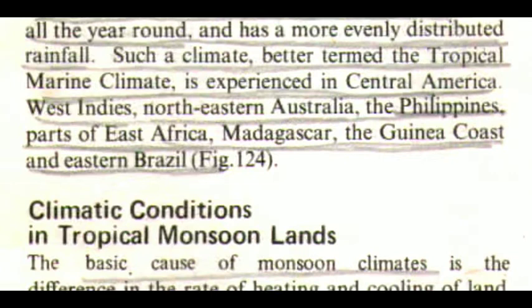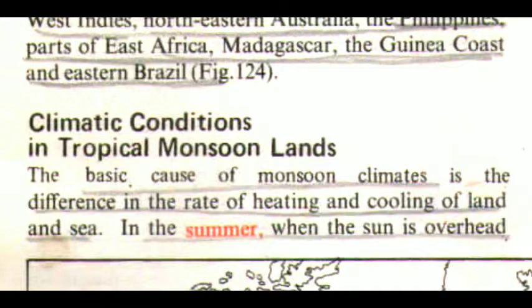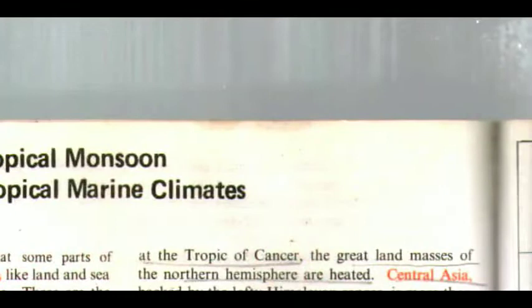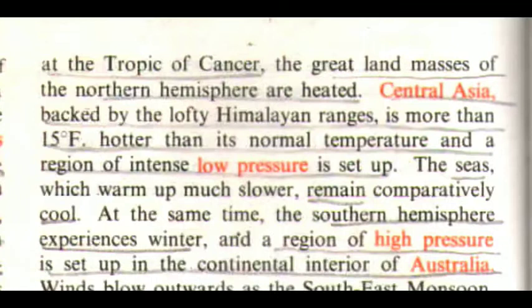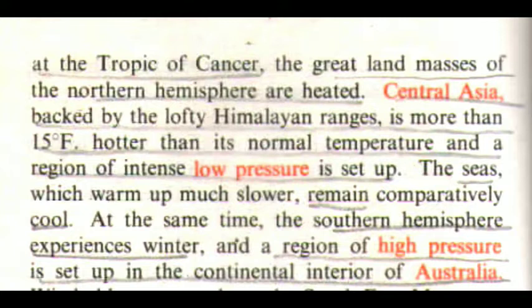Climatic Conditions in Tropical Monsoon Lands. The basic cause of monsoon climates is the difference in the rate of heating and cooling of land and sea. In the summer, when the sun is overhead at the Tropic of Cancer, the great land masses of the Northern Hemisphere are heated. Central Asia, backed by the lofty Himalayan ranges, is more than 15 degrees Fahrenheit hotter than its normal temperature, and a region of intense low pressure is set up.